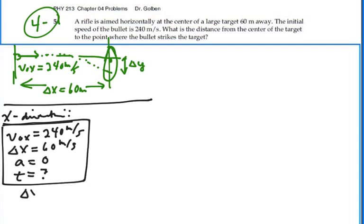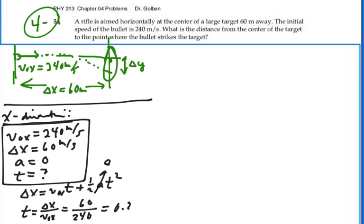Displacement equals initial velocity times time plus one half acceleration times time squared. In this case, we don't have acceleration, so strictly v_x times t. Time equals displacement divided by initial velocity in the x direction: 60 meters divided by 240 meters per second, which gives us 0.25 seconds. So this whole action of the bullet takes a quarter of a second to reach the target.